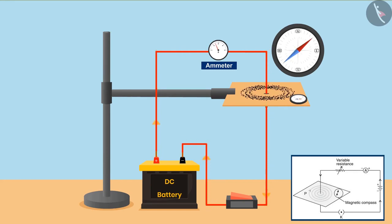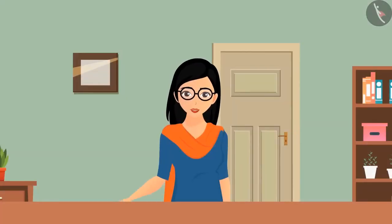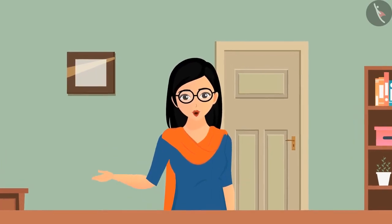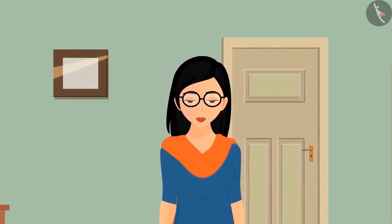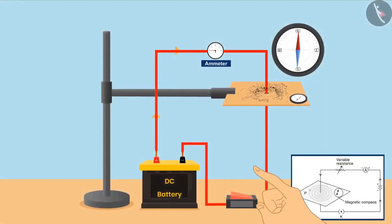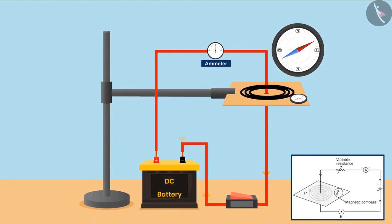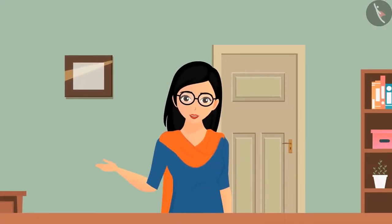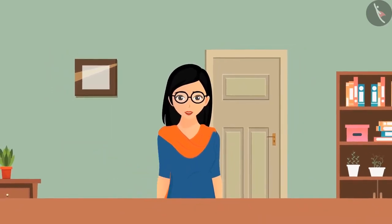If we reverse the direction of the current, the direction of the field lines also gets reversed. We have experimented with increasing, decreasing, and reversing the direction of the current. What effect does the size of the wire have on the magnetic field? Taking a piece of thick copper wire, we see that the deflection has increased with the thickness of the wire — meaning the strength of magnetic field lines has also increased.